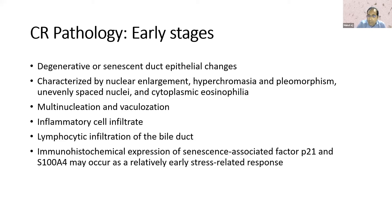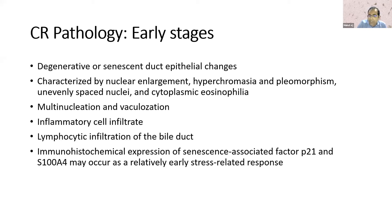In the early stages, you will see inflammatory cell infiltrate which will be mononuclear — not mixed as you've seen in acute TCMR. You will also continuously see lymphocytic infiltration of the bile duct. If you do IHC, it will show markers of replicative senescence like P21, or stress-related factors, or EMT transition marker S100A4 would be positive.